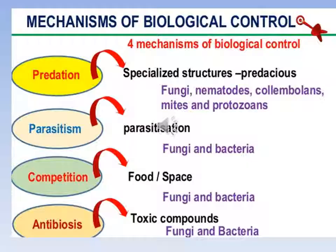The mode of action of biocontrol agents: they act in different ways on the host — by predation, consuming the pest; by parasitism; by fungi and bacteria; through competition for food and space; and through antibiotics, releasing toxic compounds to kill insects. There are many ways in which biological control agents exert control.